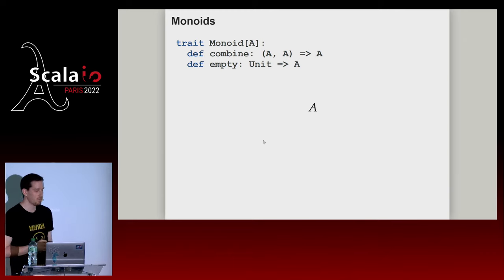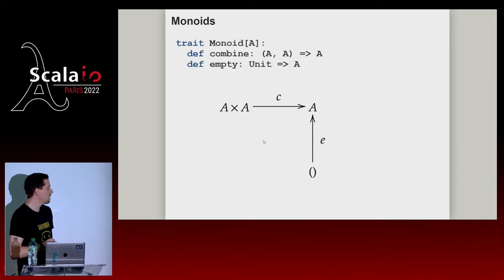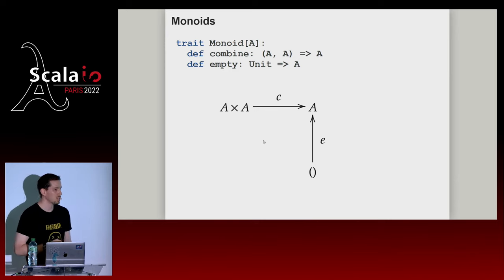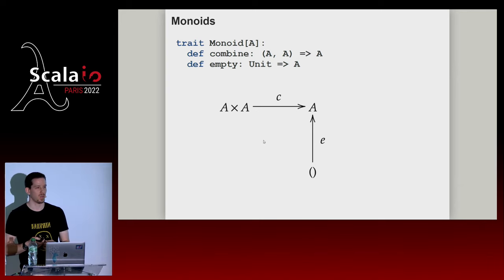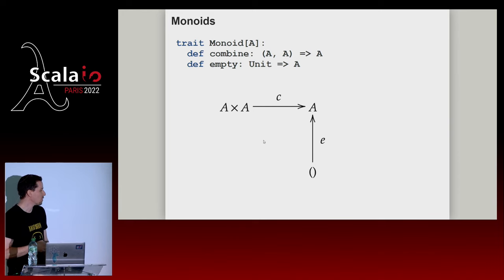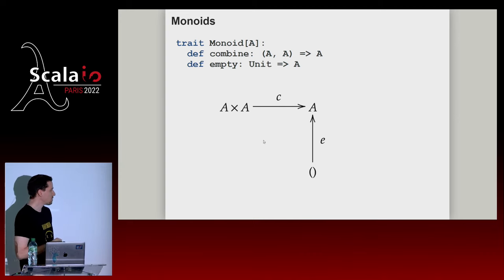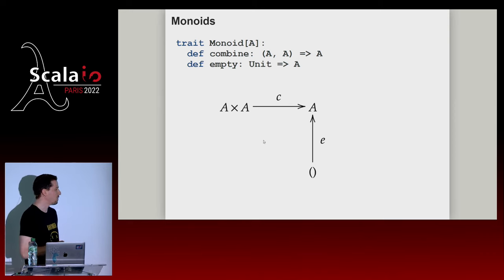What I want to do is take the monoid we know from programming and convert it into the categorical equivalent using diagrams. A monoid over some type A has a combine operation: given a product of two A's, we combine them into a single one. It also has an empty morphism starting from the terminal object — a function that takes us into A. Functions from unit are exactly constants within a specific type; that's the way mathematicians cheat. This is a full categorical description of a monoid.